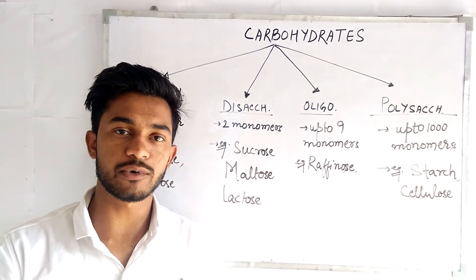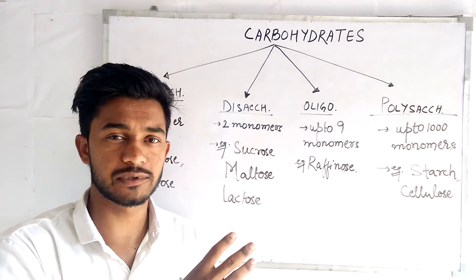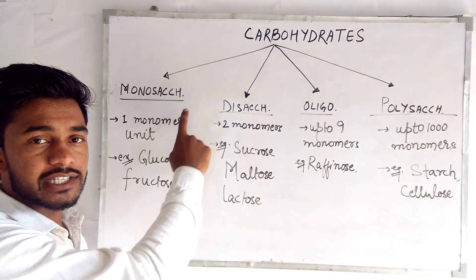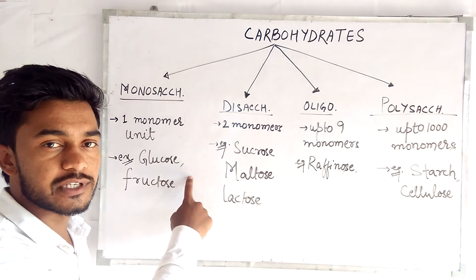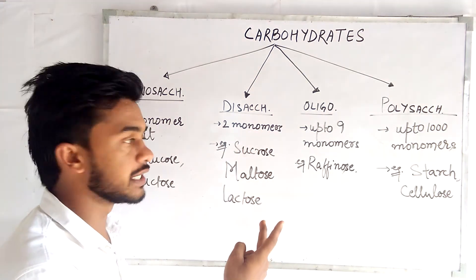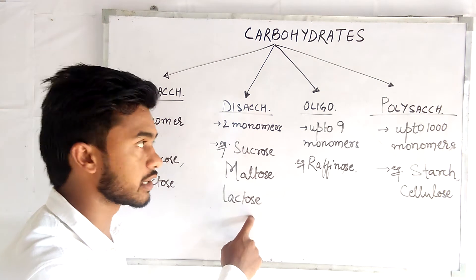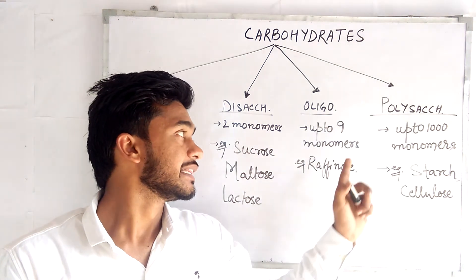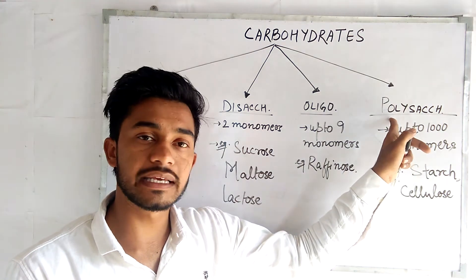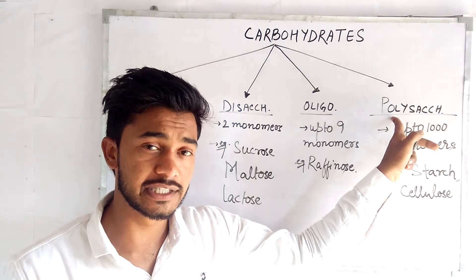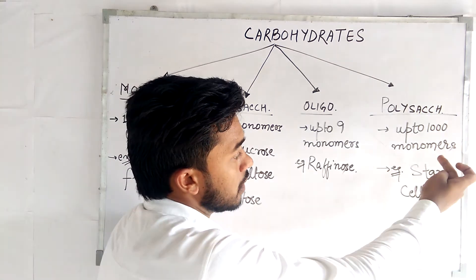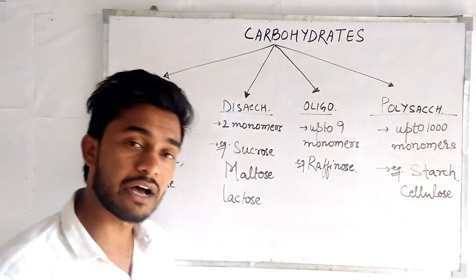Now the classification of carbohydrates. Carbohydrates are broadly classified into four types. First, monosaccharides contain a single monomer unit; examples are glucose and fructose. Second, disaccharides contain two monomer units; examples are sucrose, maltose, and lactose. Third, oligosaccharides contain up to nine monomer units; example is raffinose. Fourth, polysaccharides contain up to thousands of monomer units in long chains; examples are starch and cellulose.